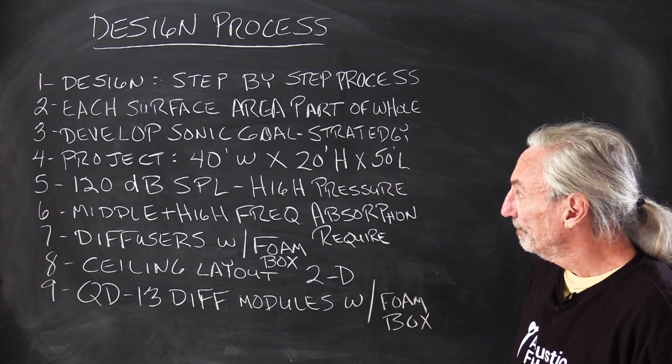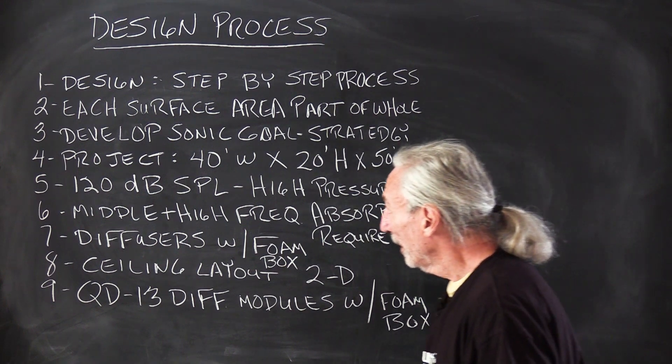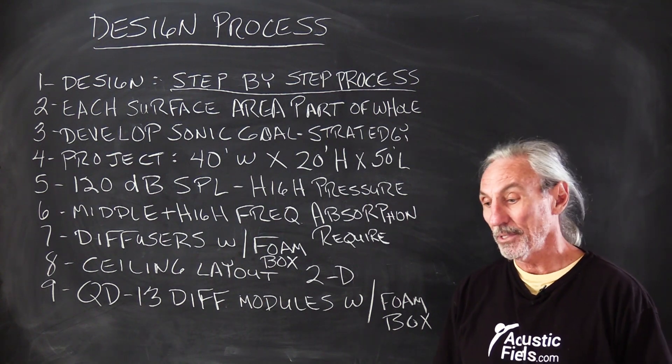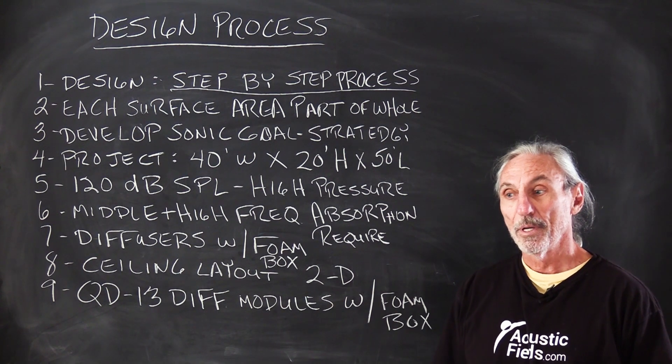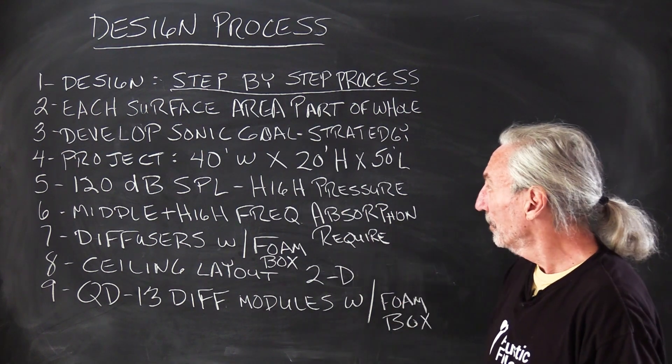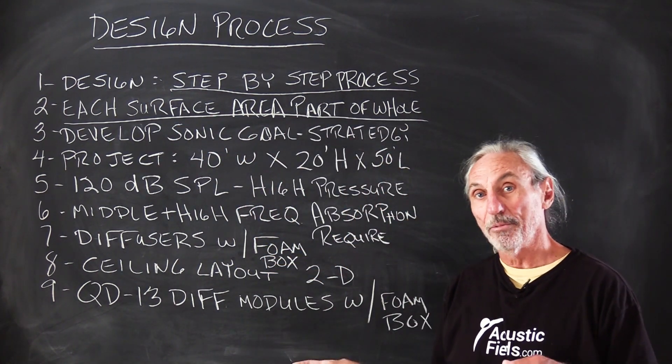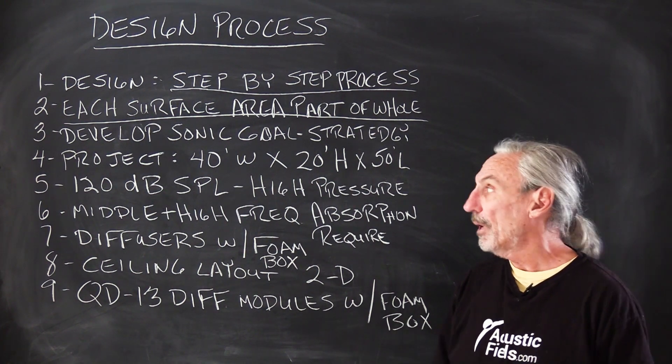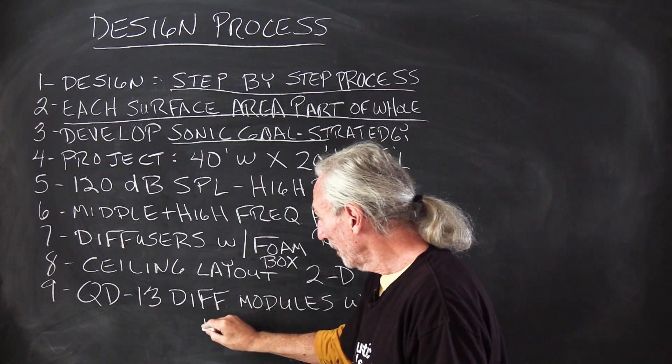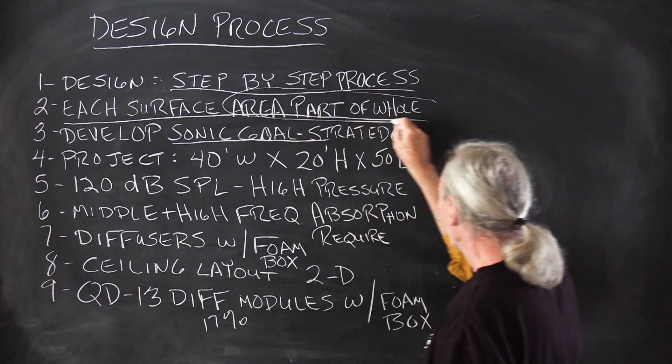Here's a process that we're using on a project overseas, so we thought we'd highlight some of the steps we go through. It's a step-by-step process - design is always a step-by-step process. You start with some goals and room sizes, then we increase or decrease that to fit the usage. We have to realize that every surface area - the side walls, the front wall, the rear wall, the ceiling, the floor - are all part of a sonic goal, and each surface area contributes about 17% to this goal.